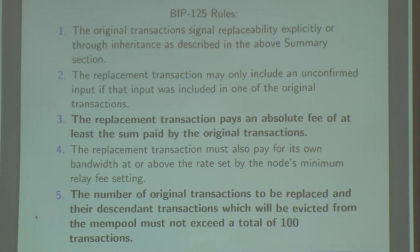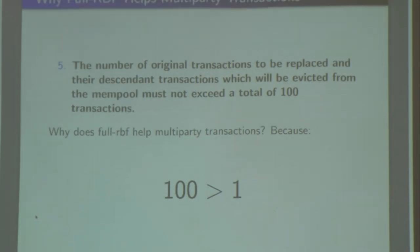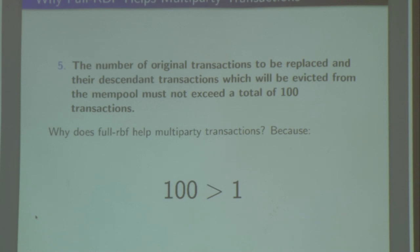That was Suhas's idea — since transaction pinning is a problem, we should yank full RBF and come up with something better. I would argue this is not really true. If we're doing a CoinJoin and someone accidentally does a double-spend — maybe they've imported the same seed into two different wallets at once — full RBF helps a lot. If the double-spend pays more fees, the CoinJoin gets cancelled, but we still make forward progress because the double-spend eventually gets mined.